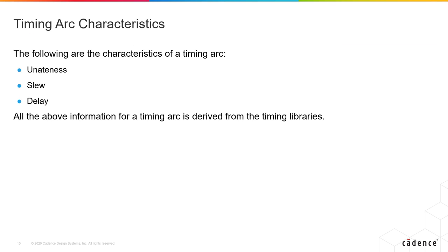The following are the different characteristics of a timing arc: u-nateness, slew, and delay. Specific information for a timing arc can be obtained from the timing libraries.